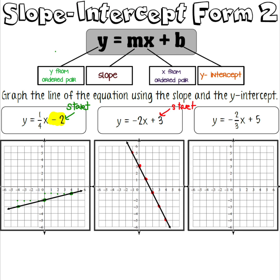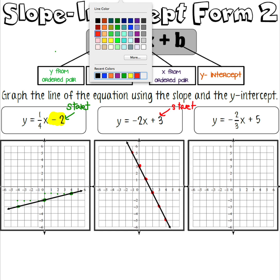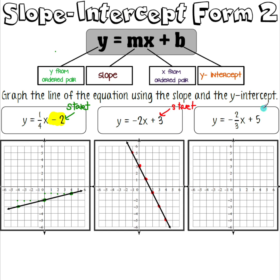Let's try one more. We are going to start at positive five on our y-axis. Our slope is negative two thirds, so we go down two over three, then down two over three again. We run out of room there, so we go ahead and make our line.